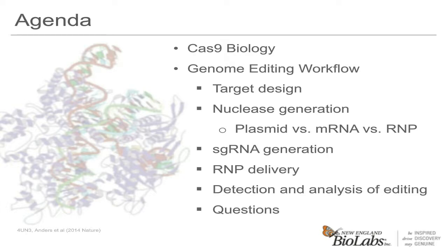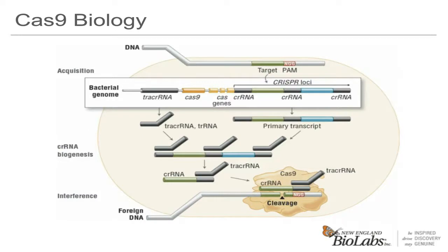I'm going to do a very brief overview of the Cas9 biology before we get started. The CRISPR-Cas9 system is a natural bacterial immune system. Bacteria have evolved this system to capture pieces of incoming foreign DNA to be used to target future invasions. The biotechnology field has been able to take advantage of this natural bacterial immune system referred to as CRISPR, which stands for Clustered Regularly Interspaced Short Palindrome Repeats.